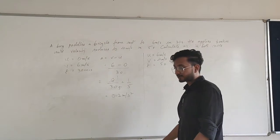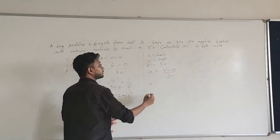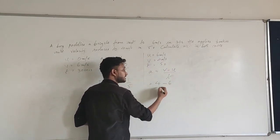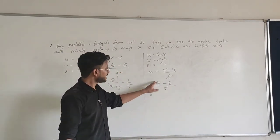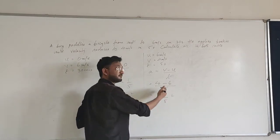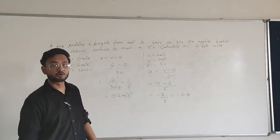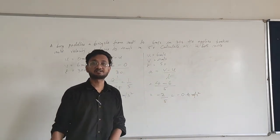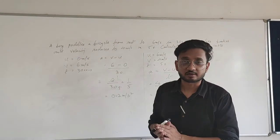Moving on to the second part. Acceleration is again a equals v minus u upon t. But now the final velocity is 4 and the initial velocity was 6, so we write 4 minus 6 upon 5 seconds. Solving this: 4 minus 6 becomes minus 2 upon 5, which gives minus 0.4 meters per second square. The minus sign indicates that it is negative acceleration — the velocity is decreasing. This is an example of retardation or negative acceleration. I hope this example from the textbook is very clear.